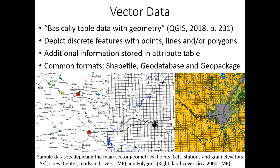The first spatial data category we'll discuss is vector data, which is probably more accessible to new GIS users. The QGIS User Manual defines vector data as table data with geometry. Vector data is used to depict discrete features using three broad geometry types: points, lines, and polygons, which are shown in the figures below through rail stations and grain elevators, roads and rivers, and land cover boundaries, respectively. Additional variables, numeric or text, are stored in the attribute table, which can then be used for analysis and visualization. Common file formats of vector data include shapefiles and file geodatabases. File geodatabases may contain multiple layers of any geometry type, and in certain cases must be exported to a new layer for editing and analysis. Geopackage, the default format in QGIS, combines elements of these two file formats.